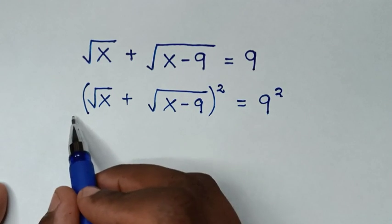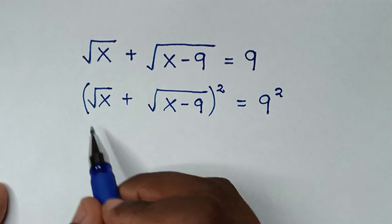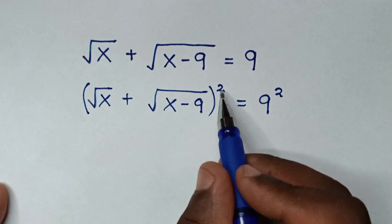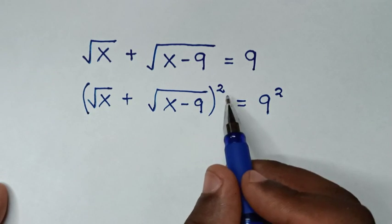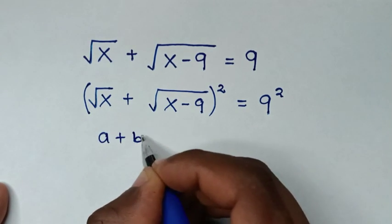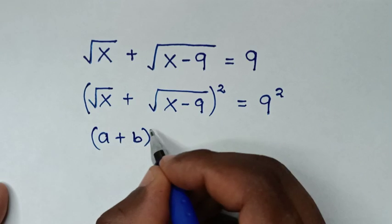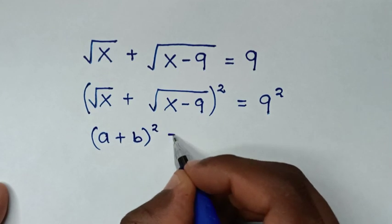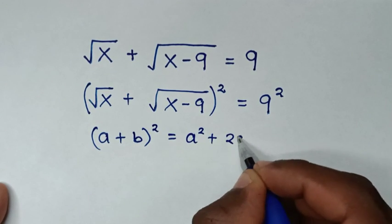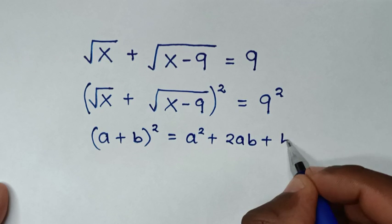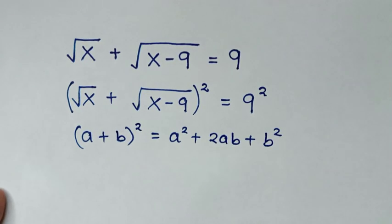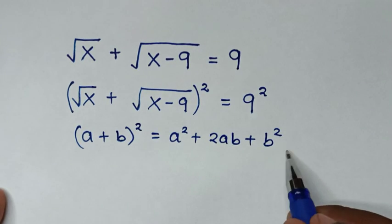The left side — square root of x plus square root of x minus 9, all squared — is in the form of (a + b) squared, which equals a squared plus 2ab plus b squared. We will apply this form.